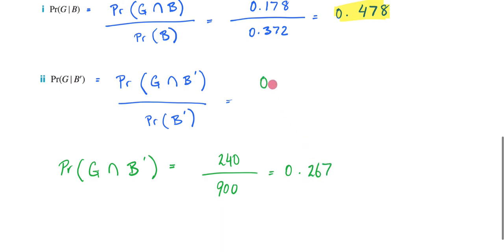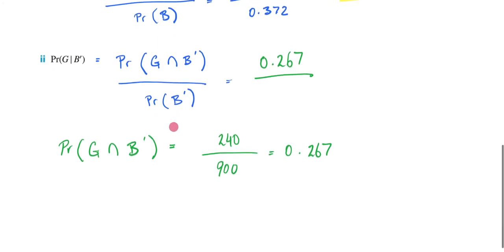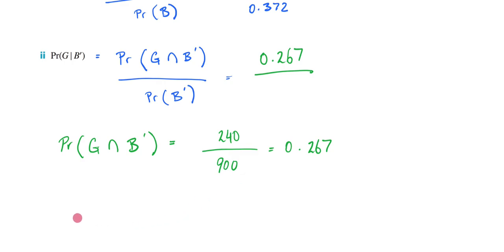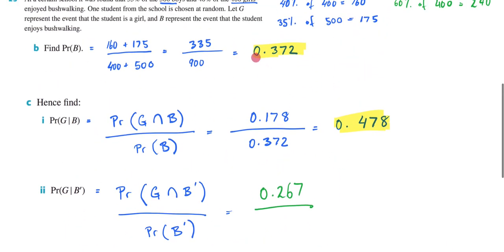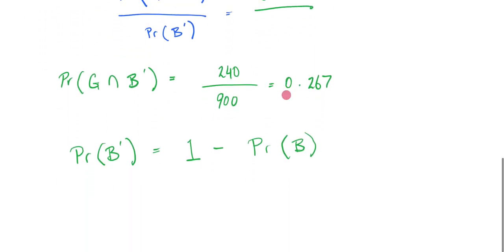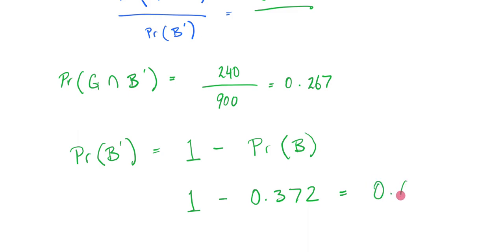So 0.267 goes into that spot. Next, we need to figure out the probability of selecting someone who doesn't enjoy bushwalking. What this is going to be is 1 minus the probability of B. We know what the probability of B is — we can scroll up and see it's 0.372. So it's going to be 1 minus 0.372, which equals 0.628.